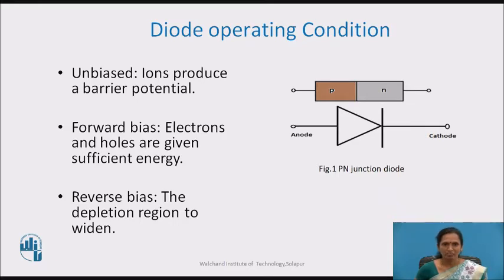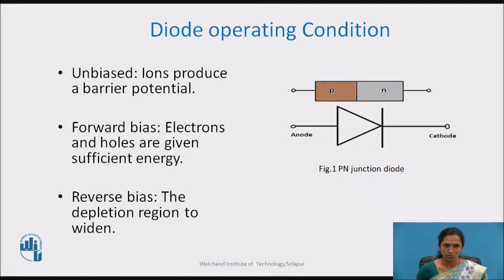The second condition is forward bias. Electrons and holes are given sufficient energy, provided that the anode of the diode is connected to the positive of the voltage source and the cathode is connected to the negative. Thus sufficient energy is provided and holes and electrons will cross the junction, and there will be flow of current through the diode. The third condition is reverse bias, where the anode is connected to the negative of the voltage source and the cathode is connected to the positive. Holes in the P type material and electrons in the N type material move away from the junction, causing the depletion region to widen — that is, an increase in depletion width.